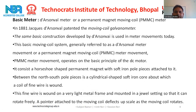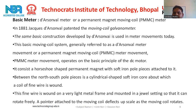The PMMC meter movement operates on the basic principle of a DC motor. It consists of a horseshoe-shaped permanent magnet with soft iron pole pieces attached to it. Between the north-south pole pieces is a cylindrical shaped soft iron core about which a coil of fine wire is wound. This fine wire is wound on a very light metal frame and mounted in a jewel setting so that it can rotate freely. A pointer attached to the moving coil deflects on the scale as the moving coil rotates.